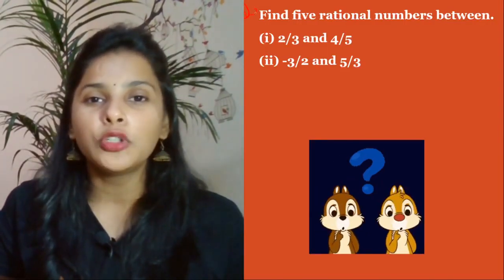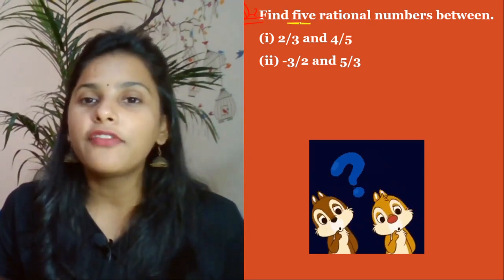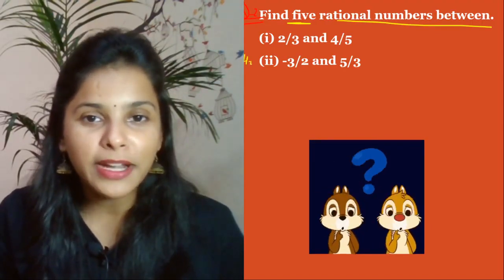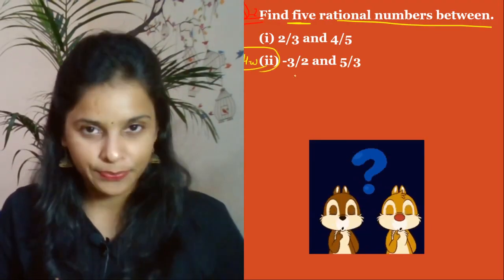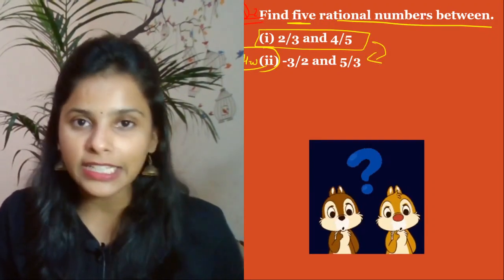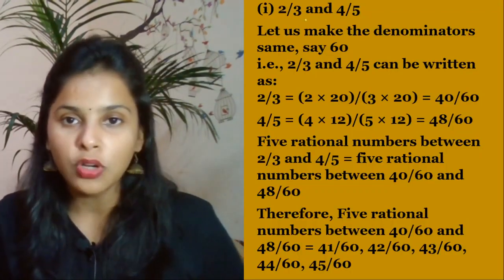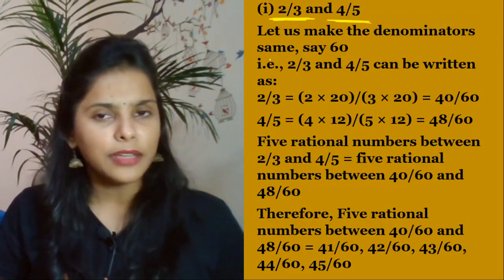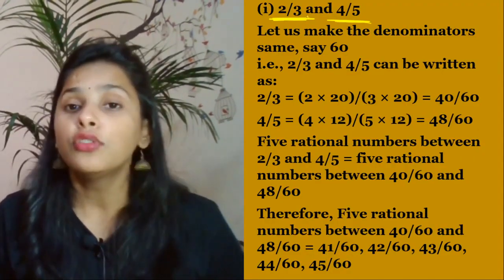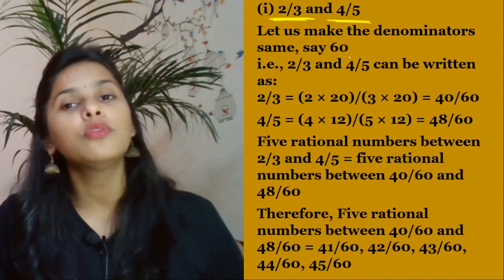Let's boom question number 2! Find five rational numbers between 2/3 and 4/5. Part 2 is your homework. It is similar to Part 1. The key thing to understand: the numbers are given in fraction form, meaning they are rational numbers — find rationals between them.